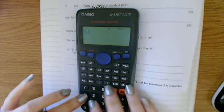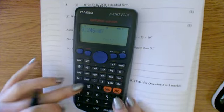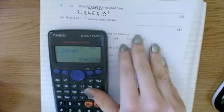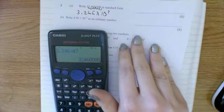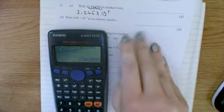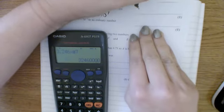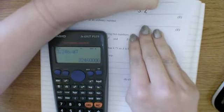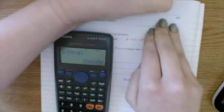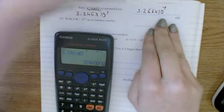But let's try typing in 3.246 times 10 to the 7. And oh look, we get back to that number that we wanted. So your calculator won't always do this exactly as you want it to, but it's a useful thing to use as a check. So 3.246 times 10 to the power of 7.